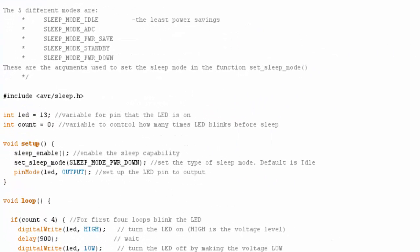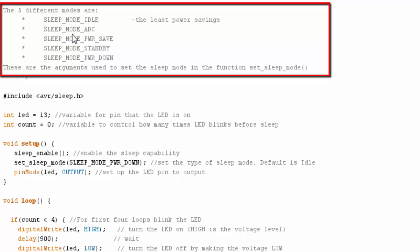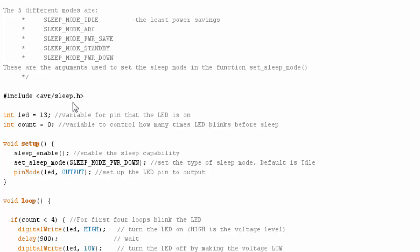We're looking at the example code for the sleep mode example. Up here are the different sleep modes, and these are the arguments you would use in a function that I'll show later. You can see I call the library, I declare a variable for my LED, I also declare a count variable that we'll use. Then here in my setup code, I'm going to enable sleep mode, then I'm going to set the sleep mode. So I'm going to tell it which one I want to use. I'm going to use power down for this example because you see the most benefits for power down as far as energy consumption. I'm using an argument from up here. Then I'm going to set my pin for my LED.